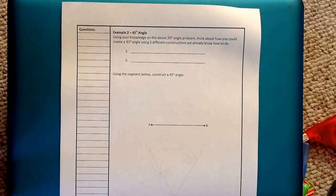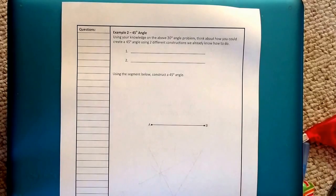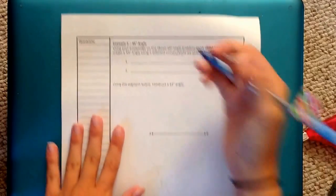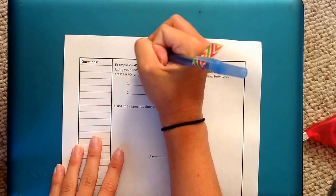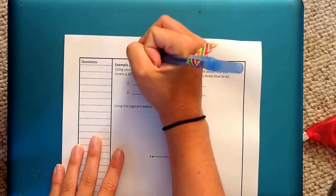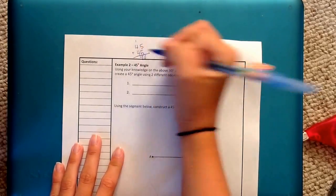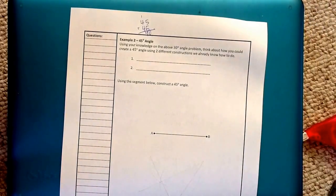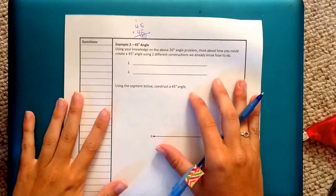On the back side, we're going to take a look at creating a 45 degree angle. So using your knowledge of the 30 degree angle problem that we just did, think about how you could create a 45 degree angle using two different constructions. We thought before about how 30 was half of 60, so maybe we should think about what 45 is half of. If you need to do a little math on the top of your paper, 45 plus 45, 0, 1, 90. So somehow we have to create a 90 degree angle. And we know that 90 degree angles come from perpendicular lines.